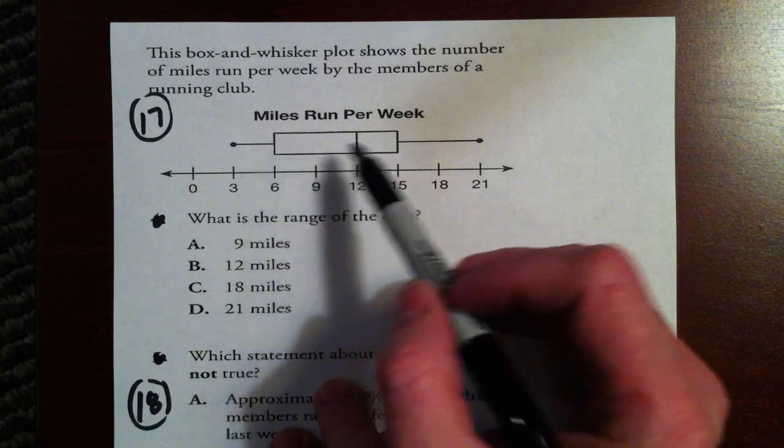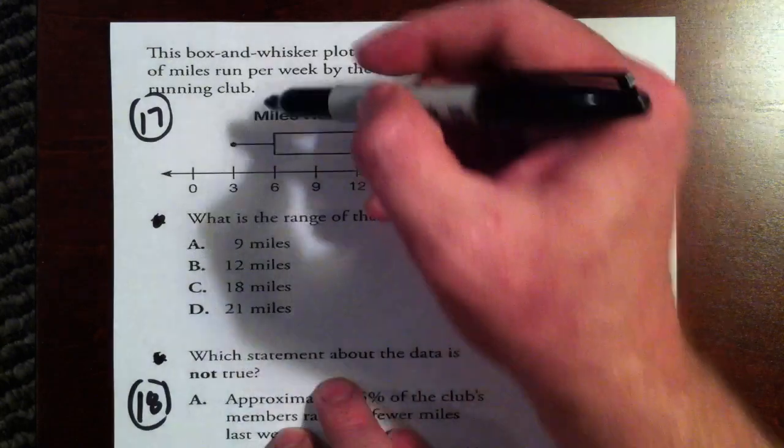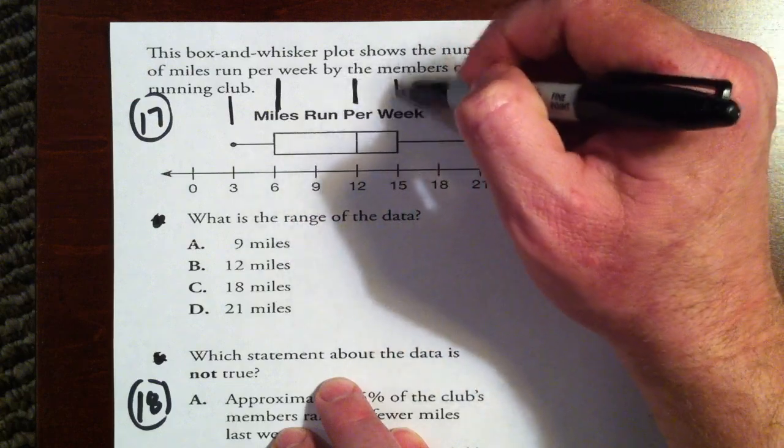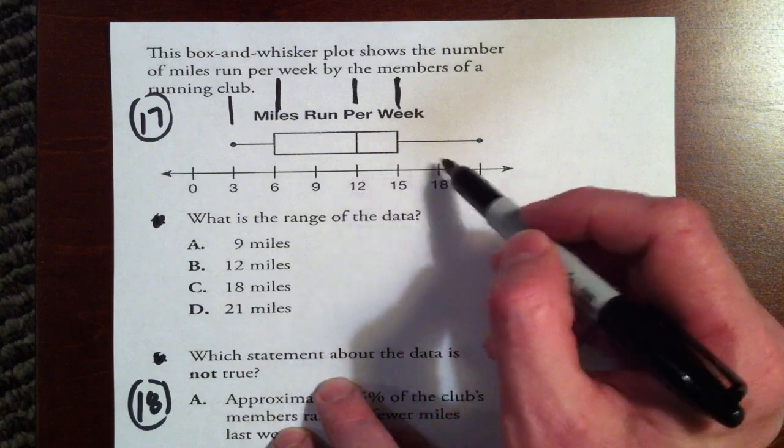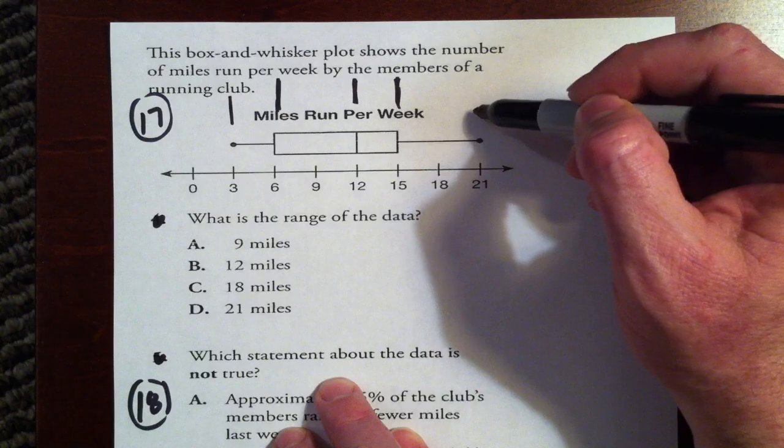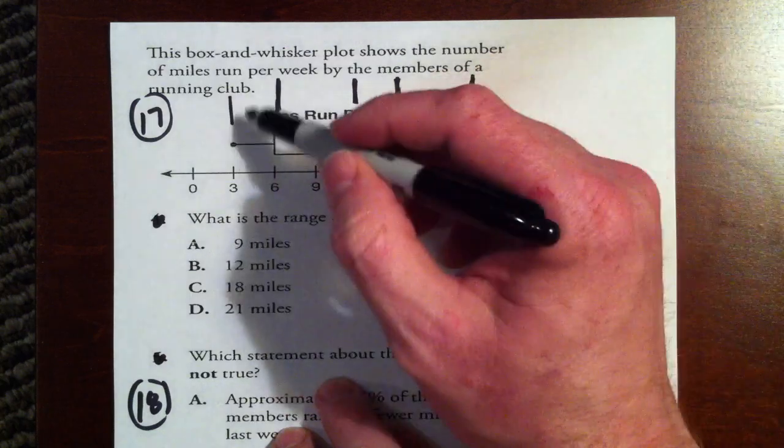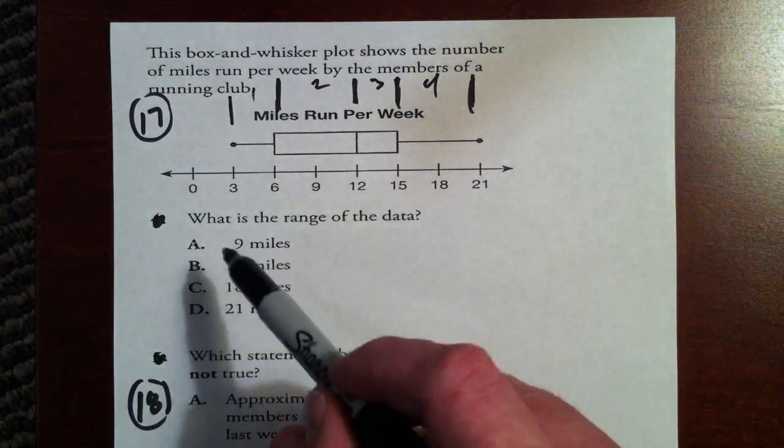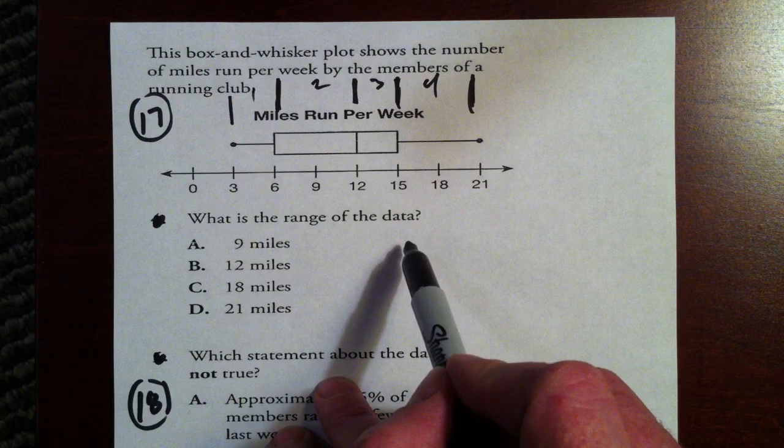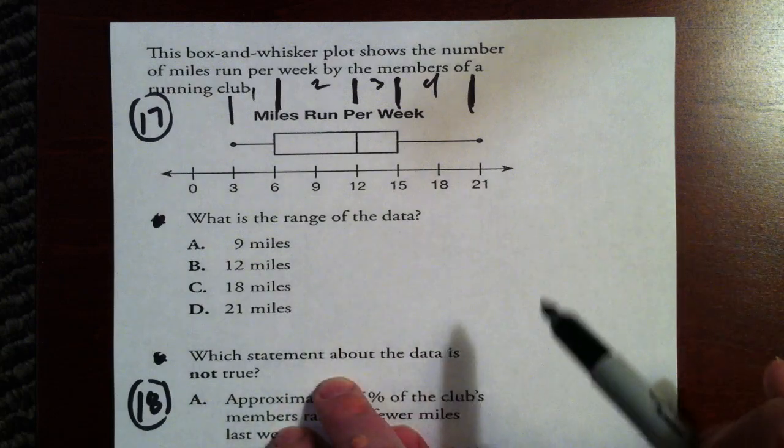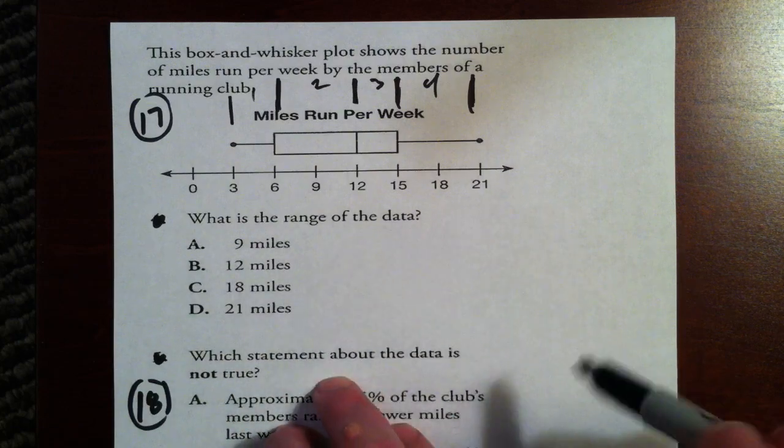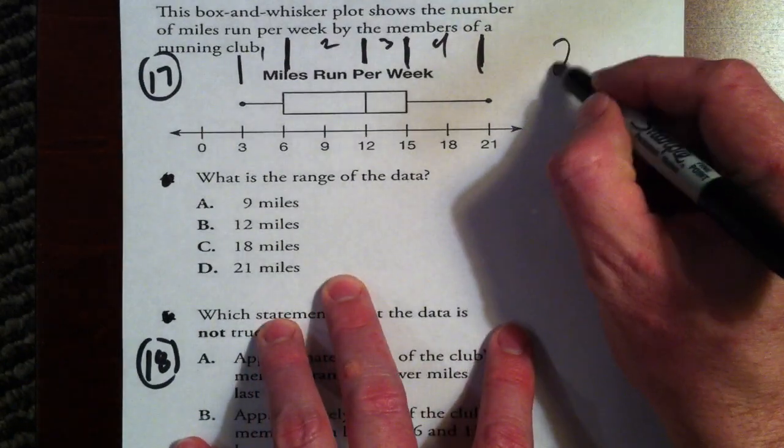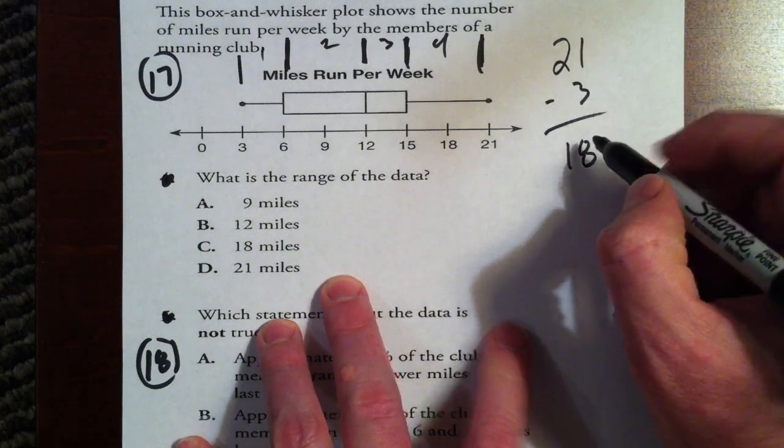17 and 18. Let me just make a statement about this box and whisker plot. Now, what they're trying to make you understand is that 25%, or one quarter of the data, falls in this range right here. Another 25% falls right here. Another 25% falls between 12 and 15. And another 25% falls between 15 and 21. So we've got one, two, three, four quarters of the data. Now, having said that, let's try to answer our question. What is the range of the data? Well, the range, as we remember, is nothing more than the difference between the lowest number and the highest number. The range is just the overall range of all the data. Well, in this case, it's basically the difference between 21 and 3. The best way to find that out is 21 minus 3, which is 18, which is C.